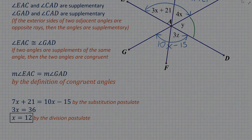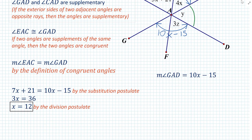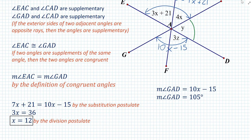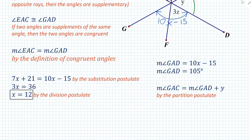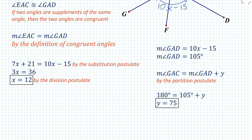How about y and z? We know that the measure of angle GAD is equal to 10x minus 15. So let's substitute x equal to 12 and see what we obtain. We obtain a value of 105 degrees for the measure of angle GAD. We also know that the measure of angle GAD is equal to the measure of angle GAD plus y by the partition postulate. Then we substitute to obtain a value of y equal to 75.